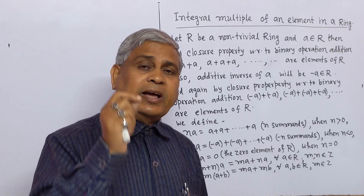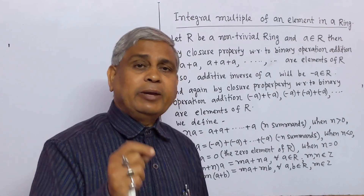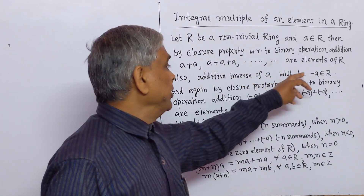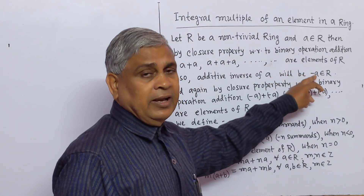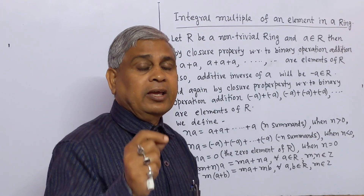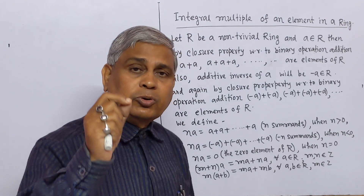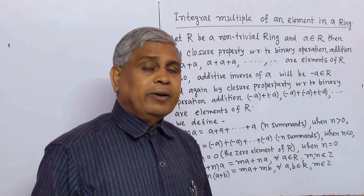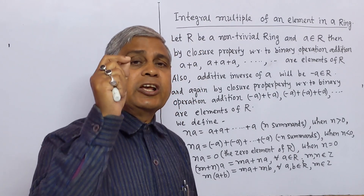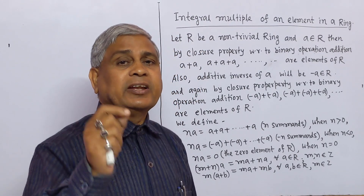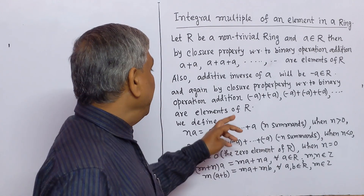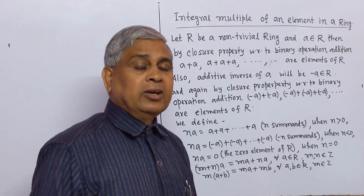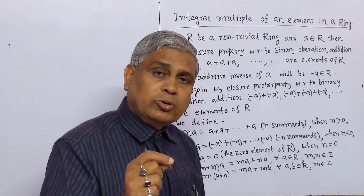Also, the additive inverse of element a will be minus a, and that minus a belongs to ring R. Again, by the closure property with respect to binary operation addition, minus a plus minus a belongs to R, and further sums of minus a all belong to R.